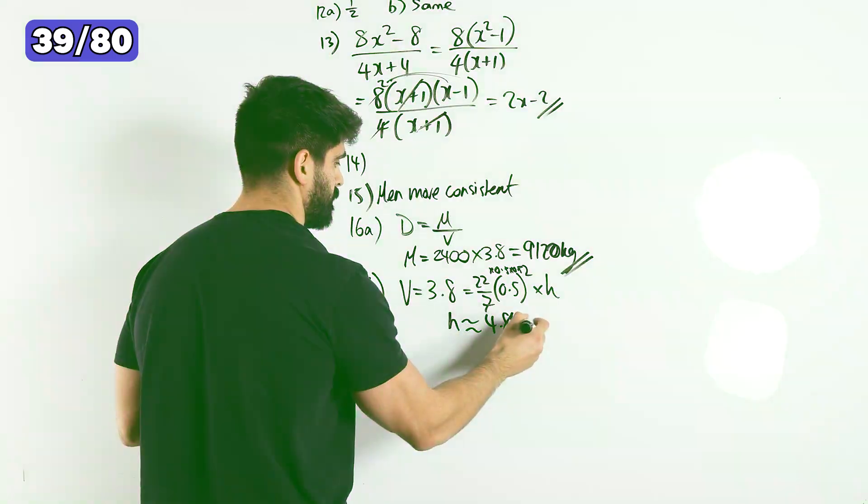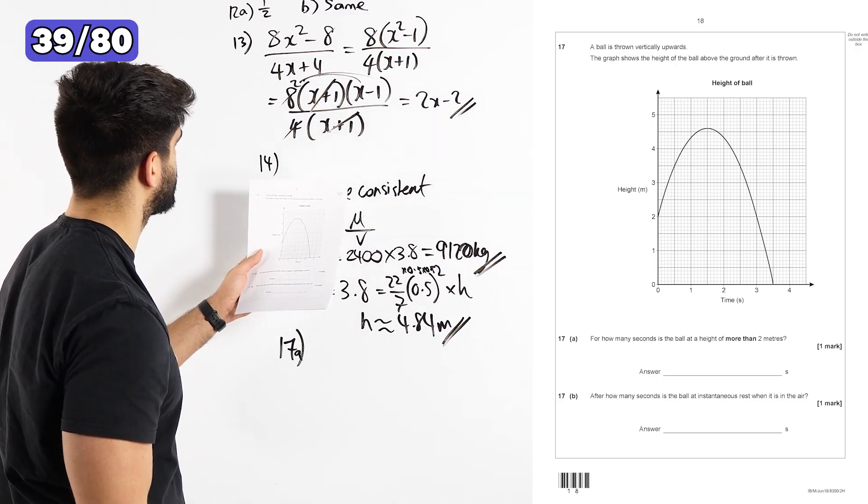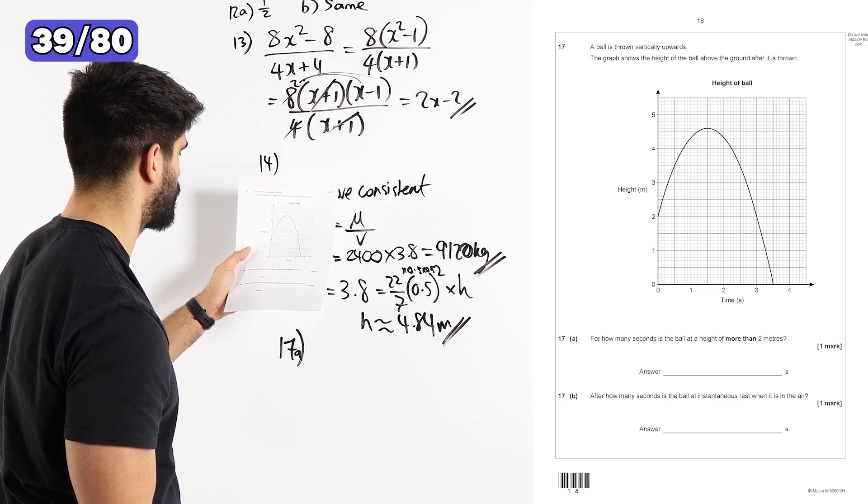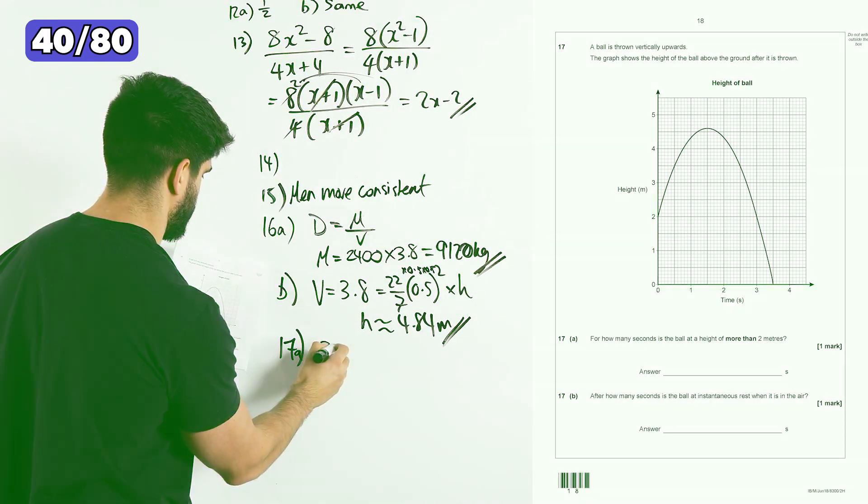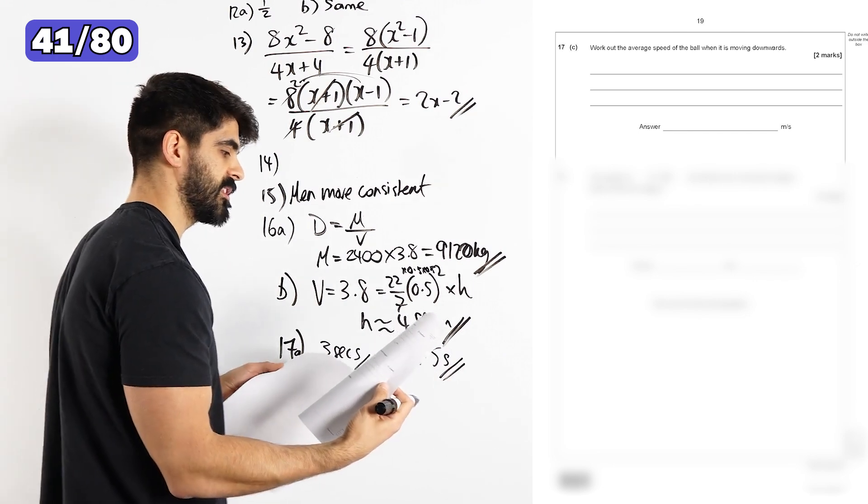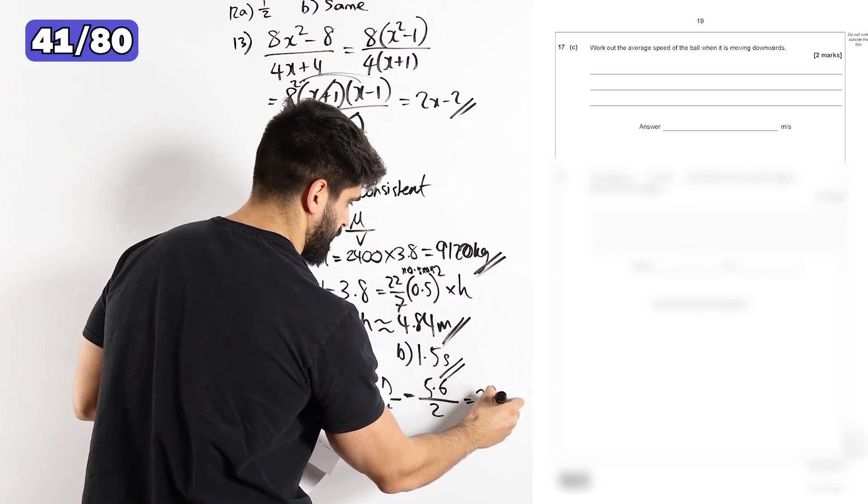Question 17. A ball is thrown vertically upwards. The graph shows the height of the ball above the ground. For how many seconds is the ball at a height more than 2 meters? 3 seconds. So it's right at the top there, which is basically 1.5 seconds. Part C says, work out the average speed of the ball when it's moving downwards. 2.8 meters per second.